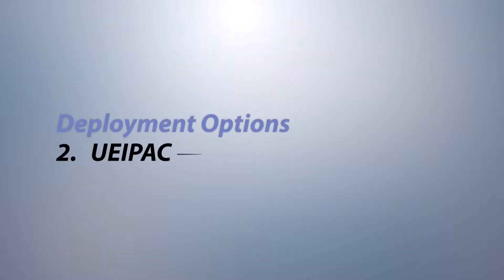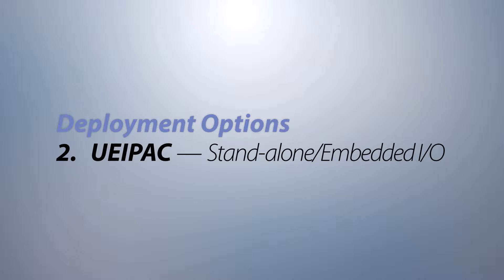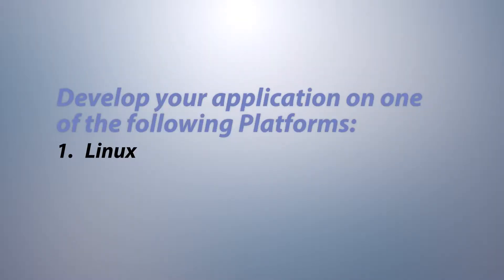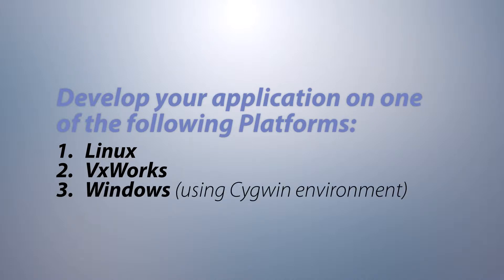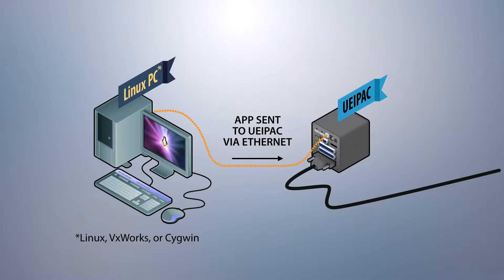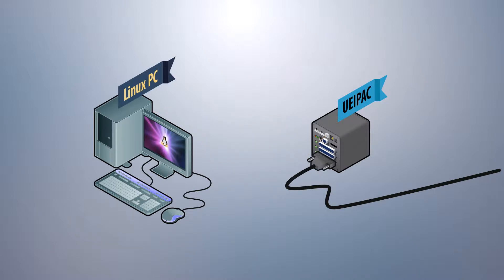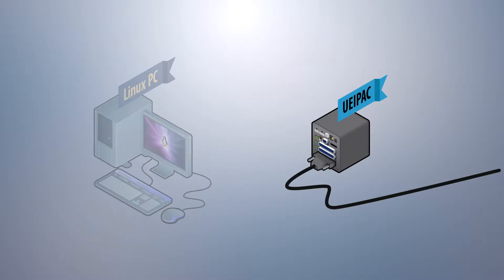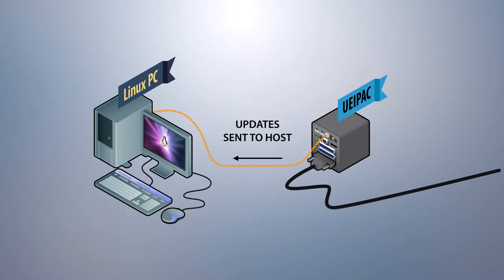When a small standalone embedded controller or powerful data logger is required, the UEI PAC is the ideal solution. Programmed in a standard Linux or VXworks operating system, the UEI PAC provides remarkable performance, flexibility, and power, all in a compact package. Build your application on a Linux or VXworks PC, or a Windows PC using SigWin. Once developed, compile your code and download it to the UEI PAC. From there, it runs fully standalone, or you may keep the UEI PAC on your network to provide updates to your host.